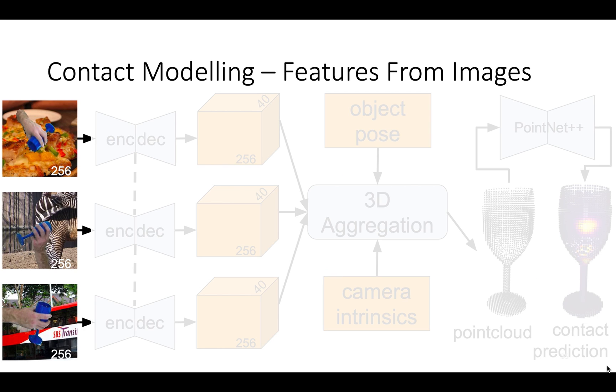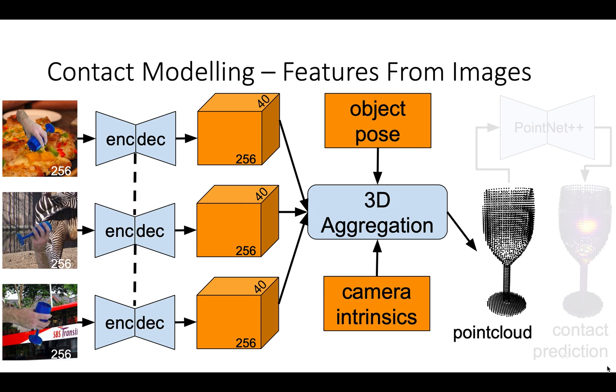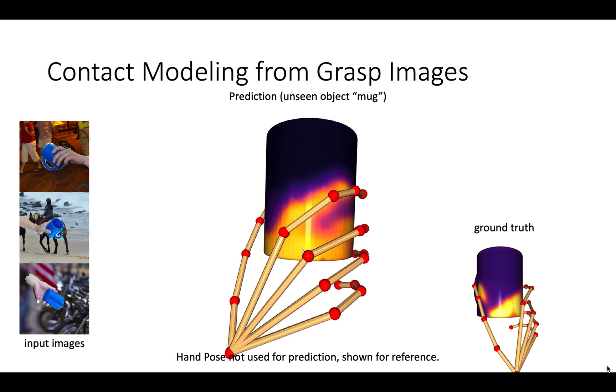We also used RGB images to predict contact. We cropped a patch around the hand and randomized the background using COCO images. And passed them through an encoder-decoder CNN to get 40-dimensional features for each pixel. Using known object pose and camera intrinsics, we aggregated the image features for visible 3D points. And then we used the same PointNet++ architecture and contact representation to predict contact. Here's an example result.